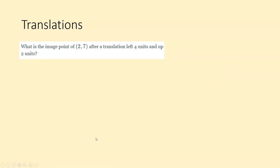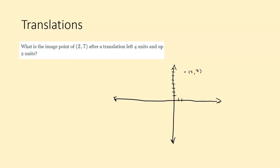Here we have a question based on a translation: what is the image of point (2, 7) after a translation left 4 units and up 2 units? So I went ahead and plotted this coordinate, 2 comma 7 — we go to the right 2 and up 7. Then it says after translation, left 4 units and up 2 units, so we want to move this point left 4 and up 2.